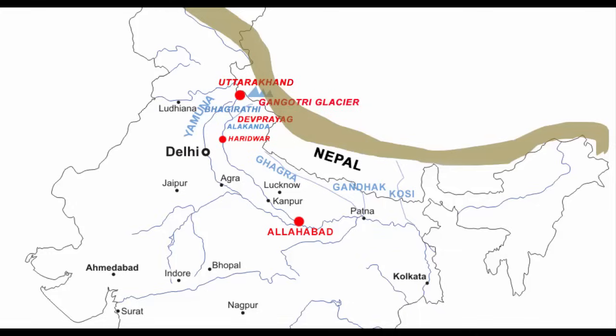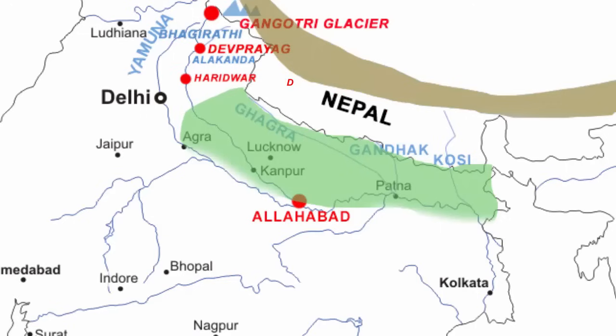These three rivers cause floods at times and ruin the northern plains. And remember, the northern plains are full of agricultural land, hence causing huge damage to properties. From the peninsular region, only three rivers join the Ganga: Chambal, Son and Betwa. They rise from a semi-arid (semi-dry) region and are short and don't contain much water. So if in an exam they ask which peninsular rivers join the Ganga, the answer is Chambal, Son and Betwa.